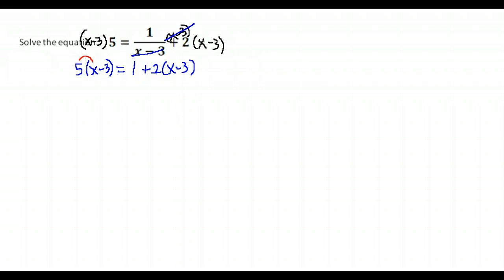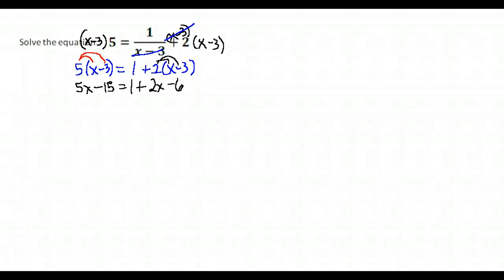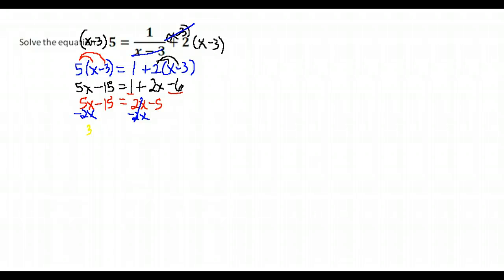Distribute to remove the parentheses: on the left we have 5X minus 15. On the right, 1 plus 2 times X is 2X, and 2 times negative 3 gives negative 6. Simplify the right side — 1 and negative 6 combine to give negative 5. Gather the X's on the same side, giving 3X minus 15 equals negative 5.